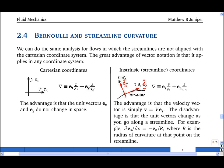The advantage of these coordinates is that the velocity vector is simply V times the unit vector in the streamline direction, Es. The disadvantage is that the unit vectors change as you go along on a streamline. But in this case the advantage outweighs the disadvantage.